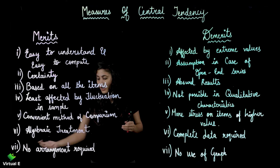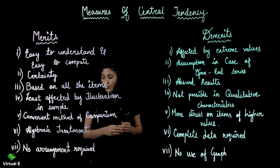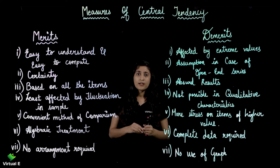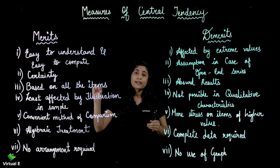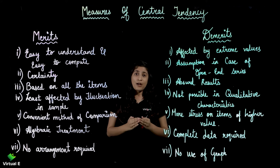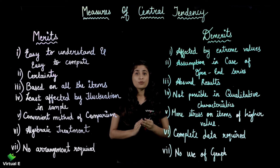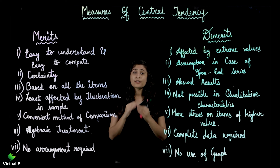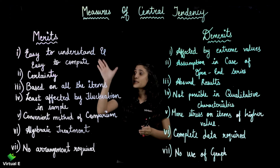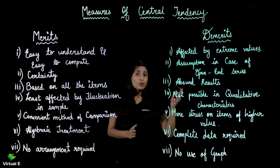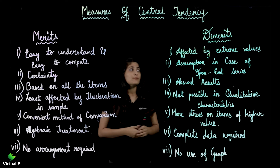The last merit is no arrangement required. In median or mode, as we will see ahead, you have to arrange the data. But in mean, you can start your calculation as the question is given — there is no need to arrange or group the data. So these were the merits, and now let us move on to the demerits of mean.